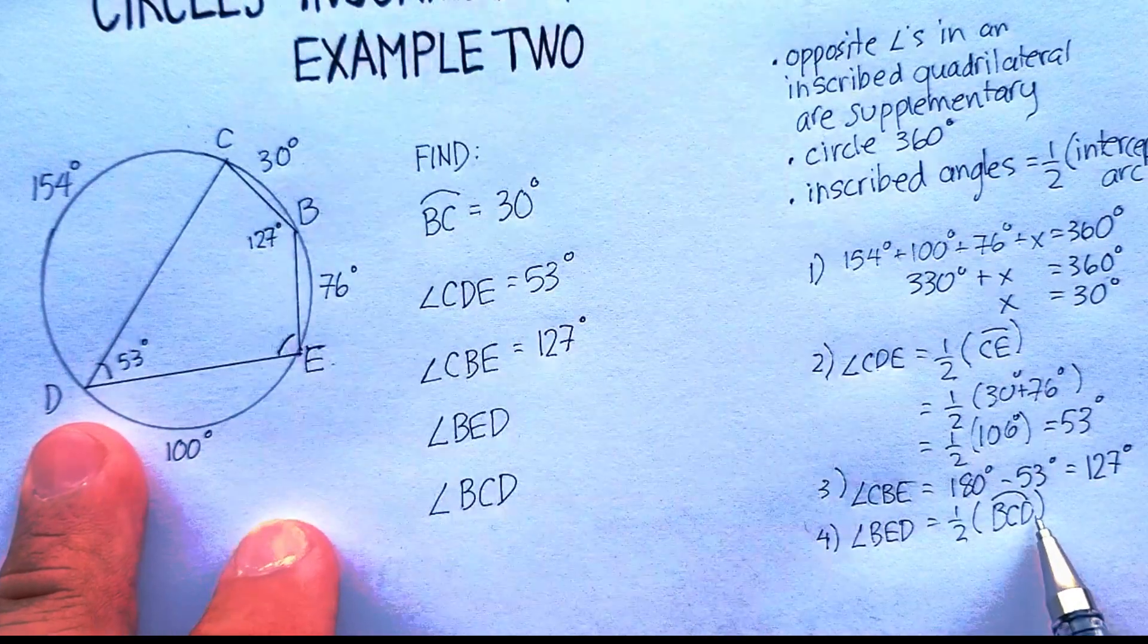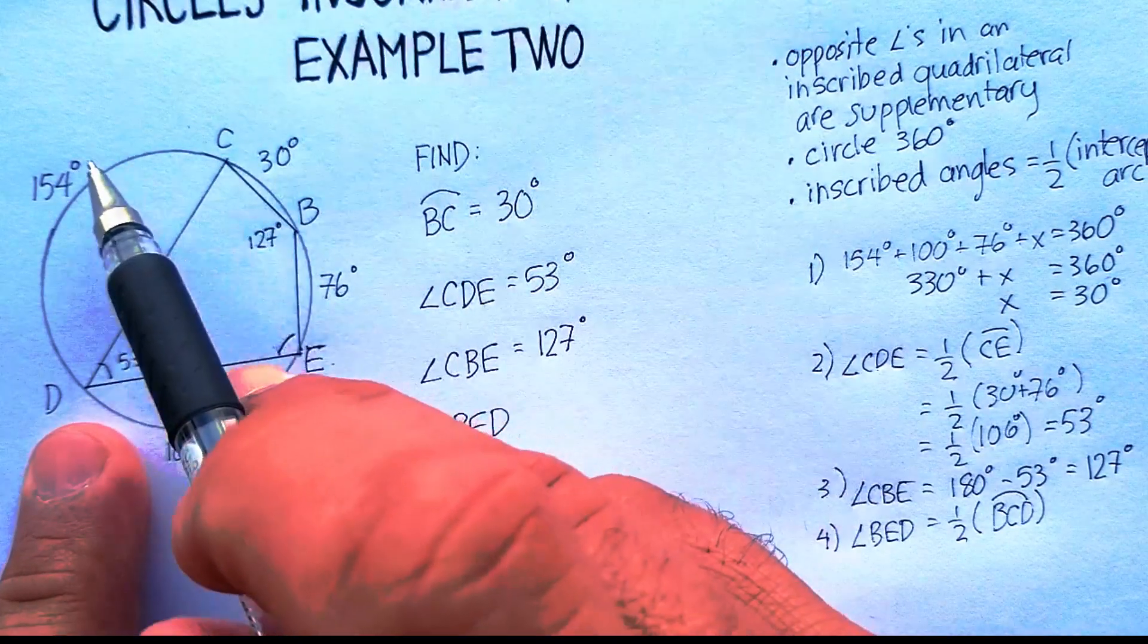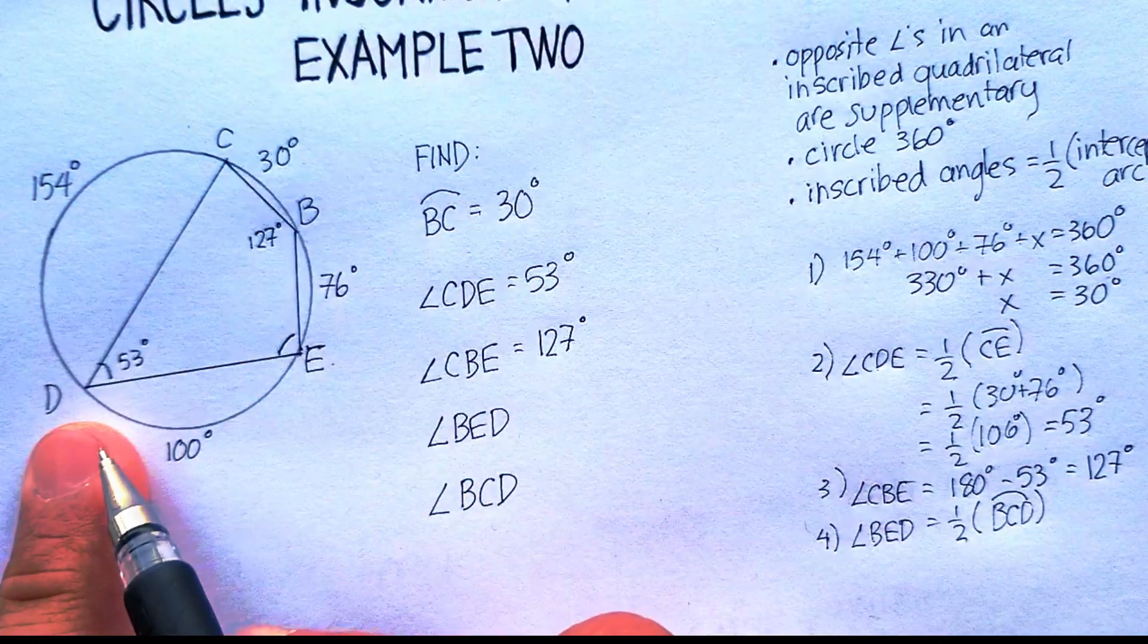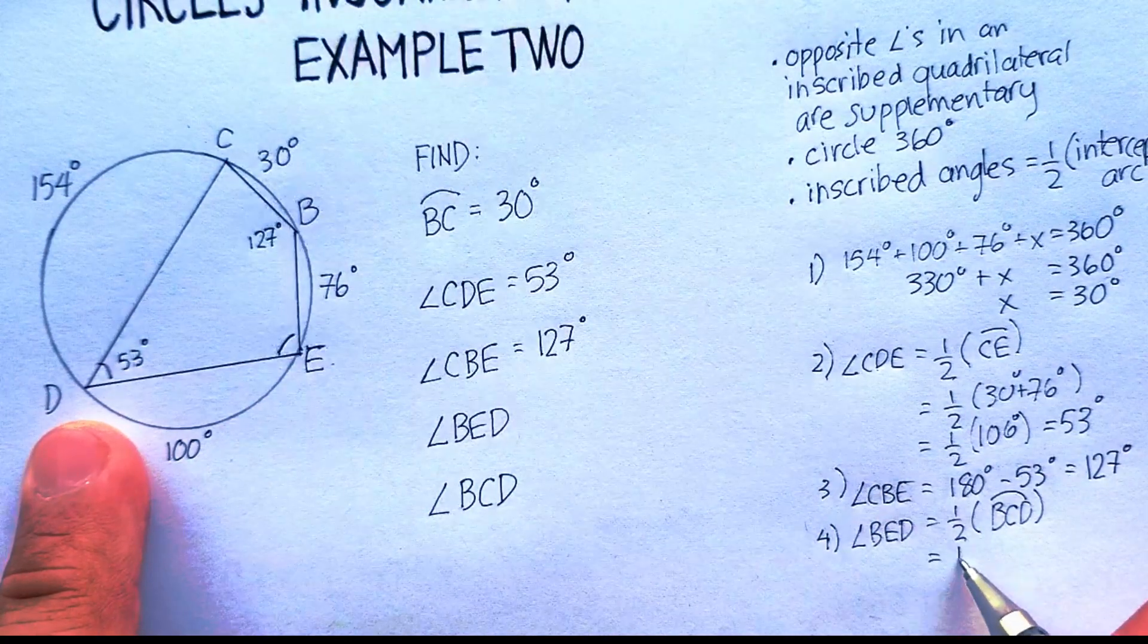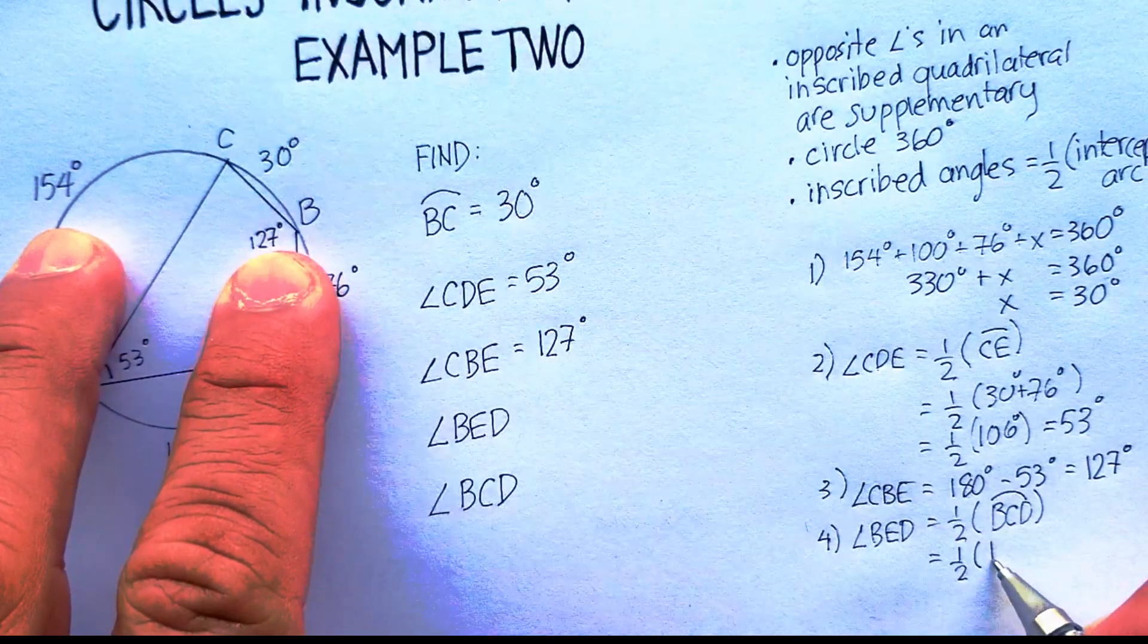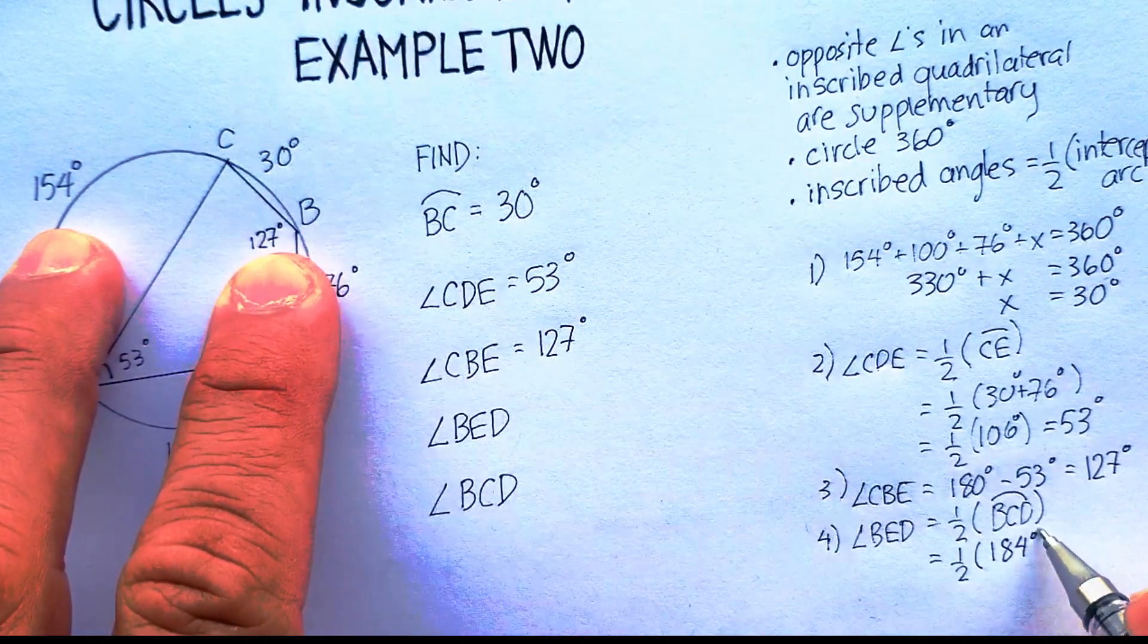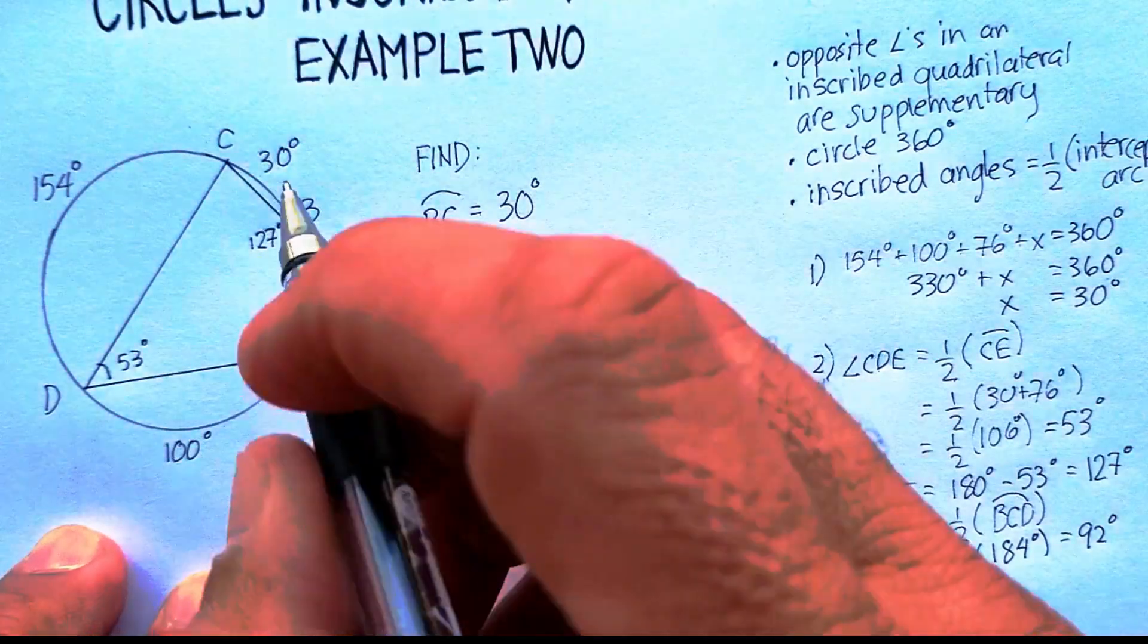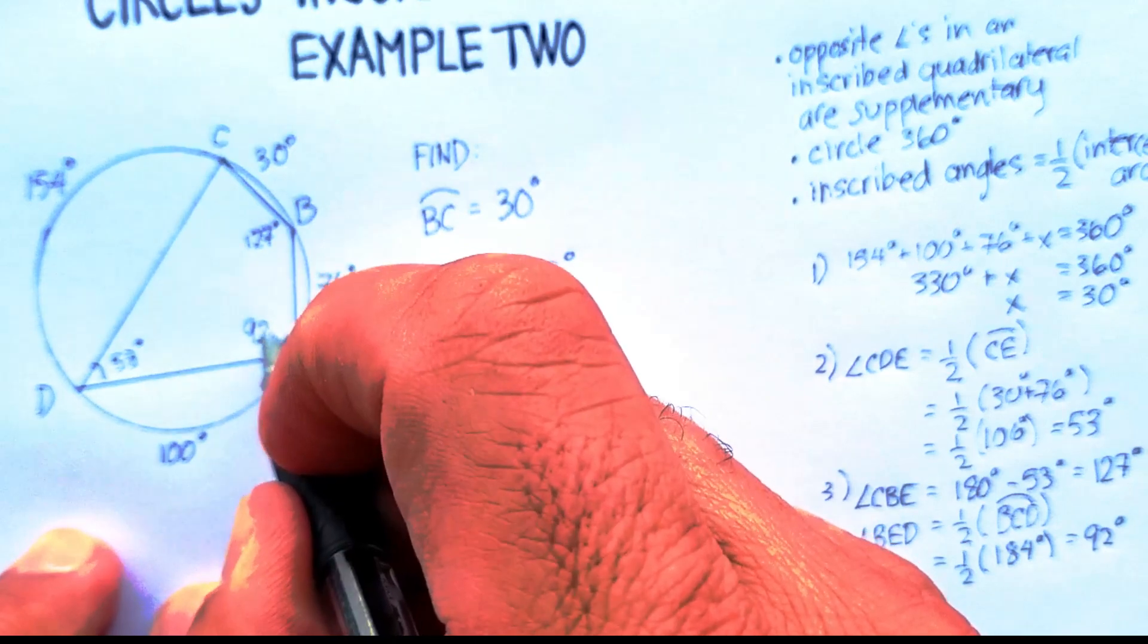It just so happens that BCD is going to be 30 plus 154. So one half of 184 is 92 degrees. So this is 92 degrees here.